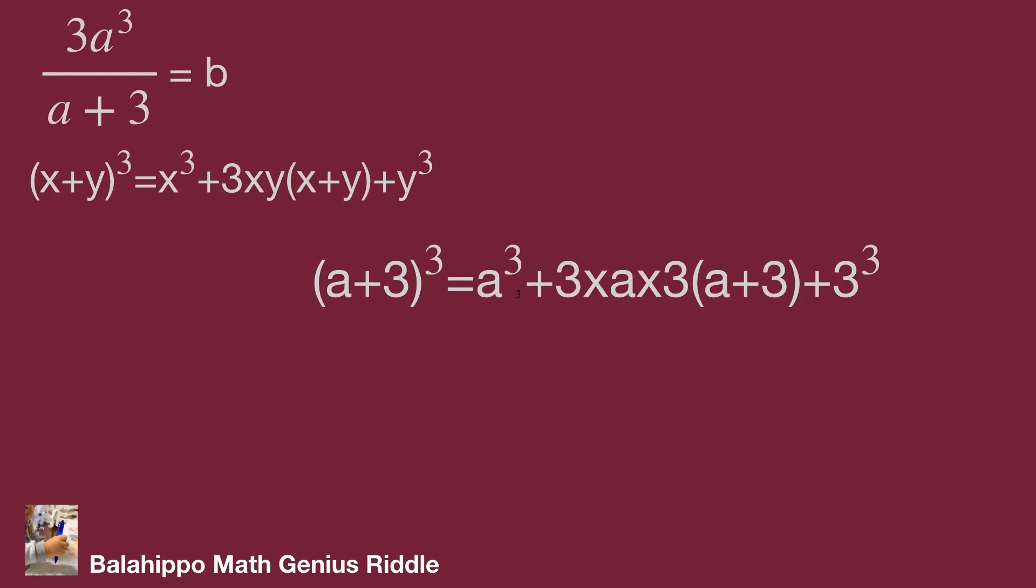Remain a³ on the right side of the equation. Then we have (a+3)³ - 3·a·3·(a+3) - 3³ = a³.